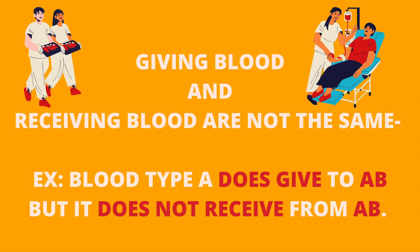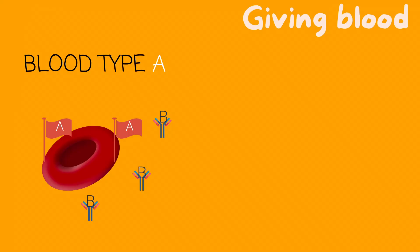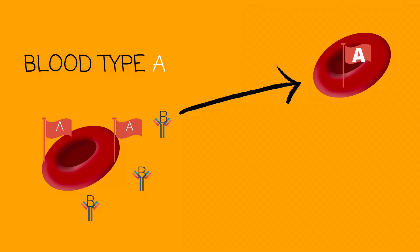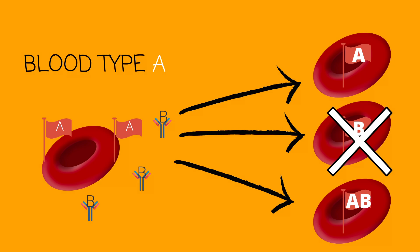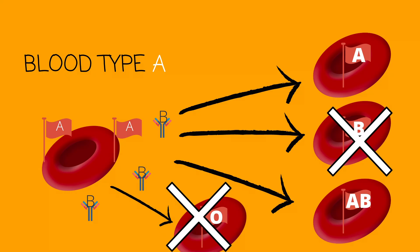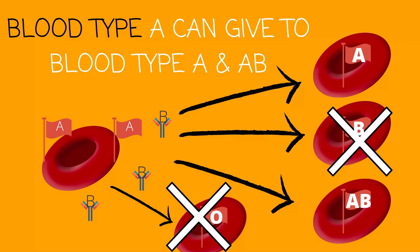I want to emphasize that giving and receiving blood are not the same. For example, blood type A can give to AB, but it cannot receive from AB. Now let's look at blood giving. Blood type A will give to those who also represent A — those with an A antigen or flag. So can it give to A? Yes. Can it give to B? No. Can it give to AB? Yes. Can it give to O? No. Blood type A can only give to A and AB.